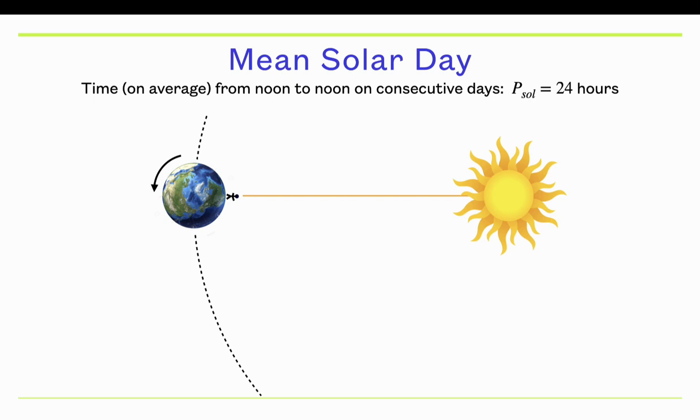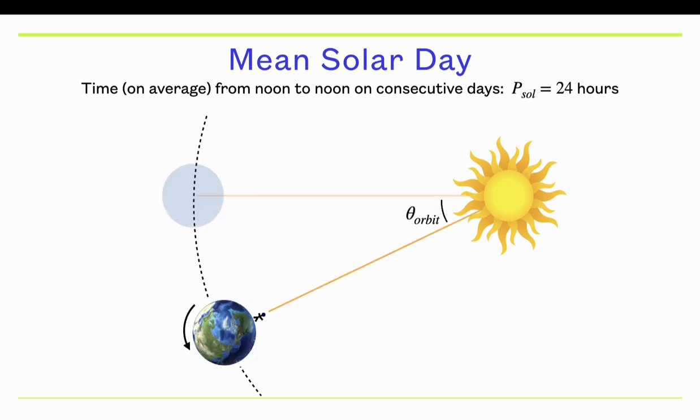A mean solar day is the time it takes from noon on one day to noon on the next day. That duration is by definition 24 hours. Here we have someone on the Earth who is directly below the Sun, so the Sun would be very close to this person's zenith. As the Earth spins on its axis, it's also orbiting around the Sun.